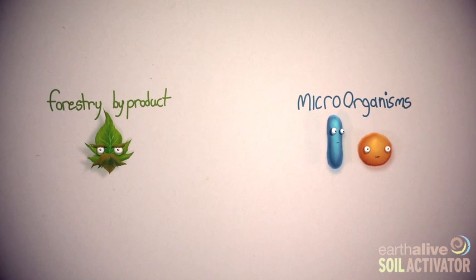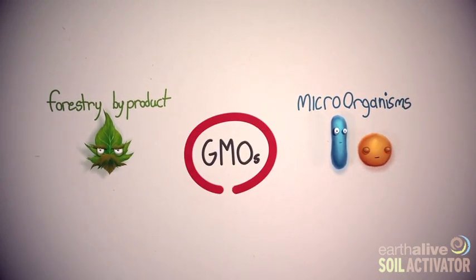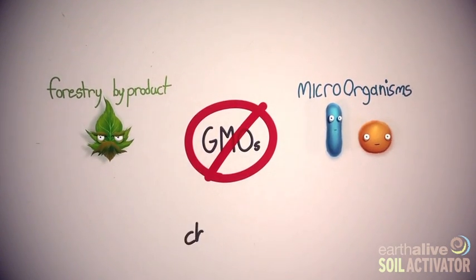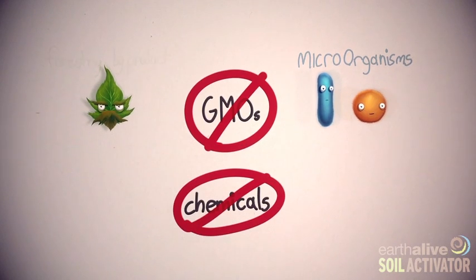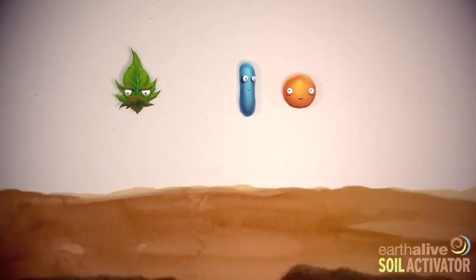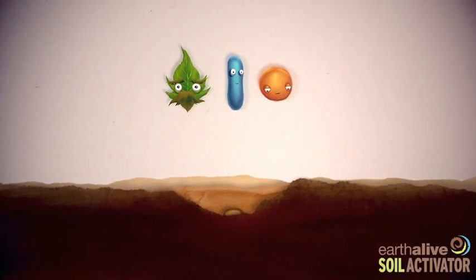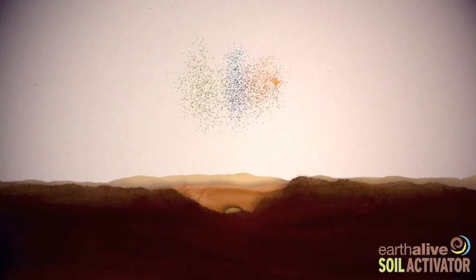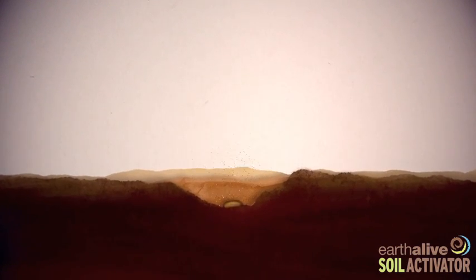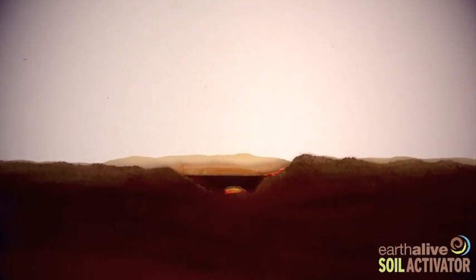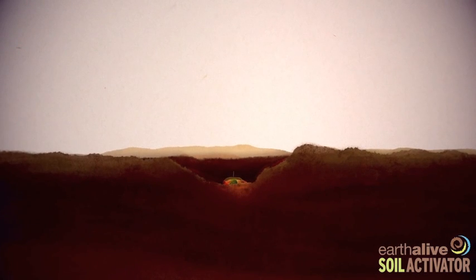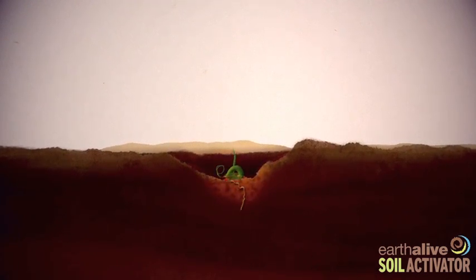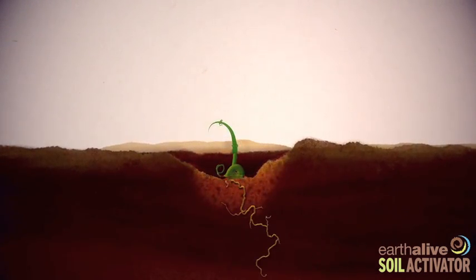It does not contain genetically modified organisms or chemically synthesized materials. When applied, preferably during seeding or planting, the beneficial microorganisms of Earth Alive Soil Activator, strains of bacilli and pseudomonads, start multiplying and colonizing the rhizosphere, the narrow region of soil around the roots of the plant.